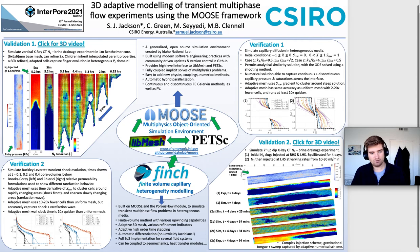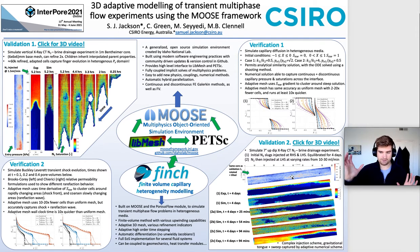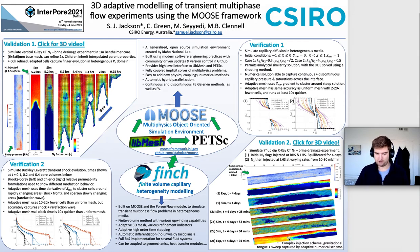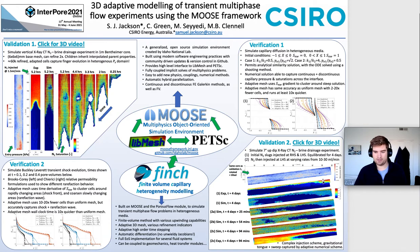The second validation uses the same core but rotated slightly — tilted by 7 degrees. In the first part of the experiment, we inject a small slug of nitrogen into the right-hand and left-hand sides and let it equilibrate for four days; you can see the simulation comparison here. In the second part, we inject nitrogen at varying flow rates from 10 to 30 millilitres per minute over about an hour and a half. The final experimental image shows the nitrogen saturation, and the simulation follows a very similar pathway to the experiment, even if at late time we slightly over-invade the system — likely a characterisation issue. The key result is that we can capture the equilibration phase, the fluid distribution, and the gravity tongue that develops as we move in time.